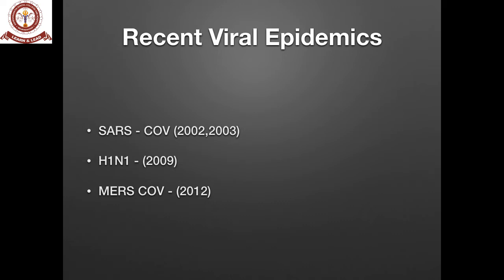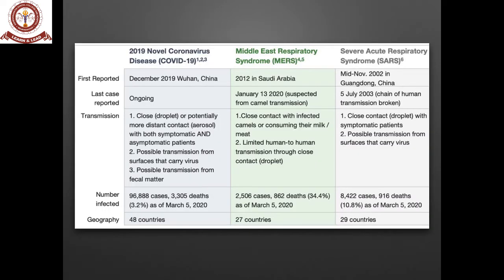Comparing COVID-19, MERS, and SARS: SARS recorded around 8,422 cases; MERS recorded around 2,500 cases; whereas COVID-19 has crossed 30 lakh cases across the globe as of the current date, with the death toll also crossing into the lakhs. It has spread to around 200 countries, which is why coronavirus has been termed a pandemic.